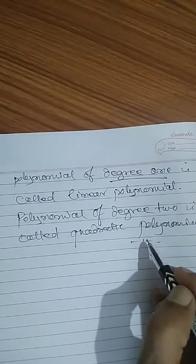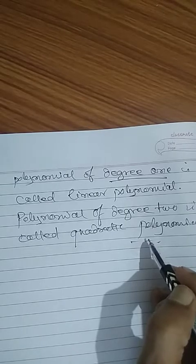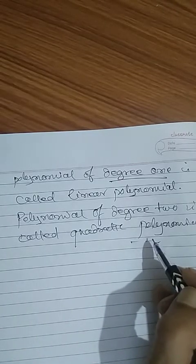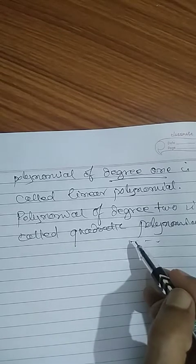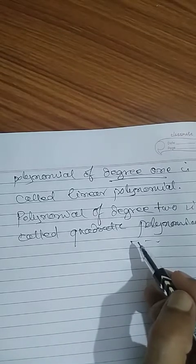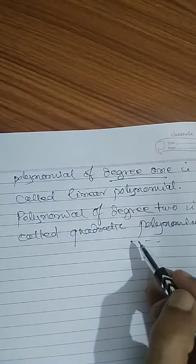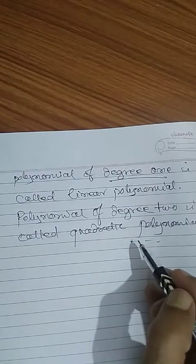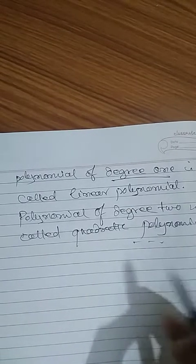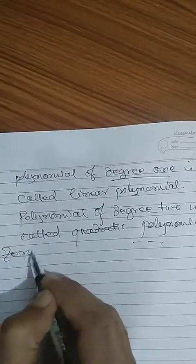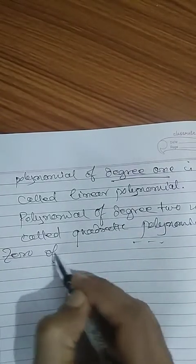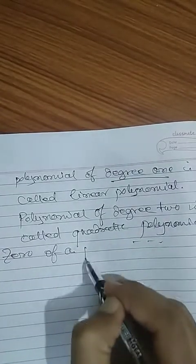Now, if the degree is 3, then that is called a cubic polynomial. One more thing that you have learnt in 9th class is the zero of a polynomial.